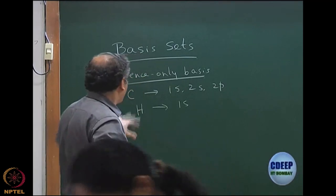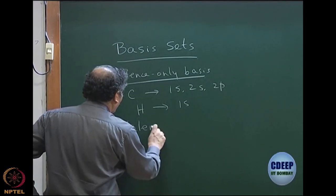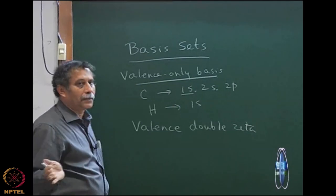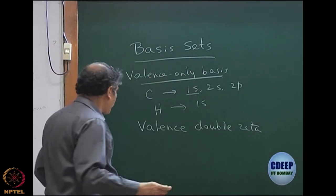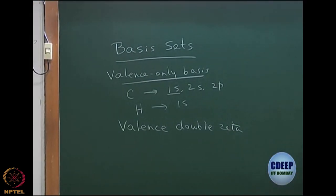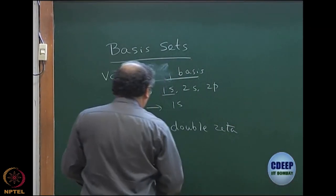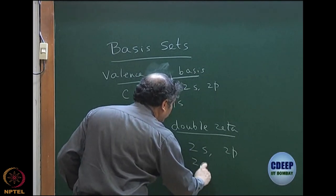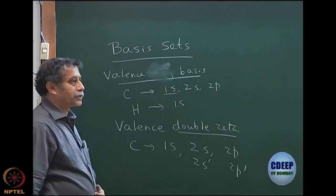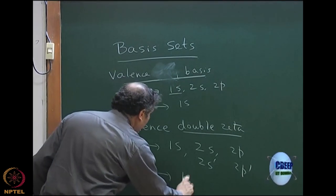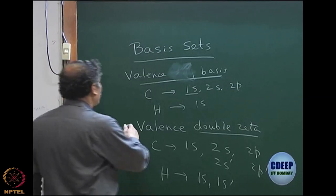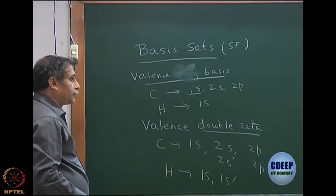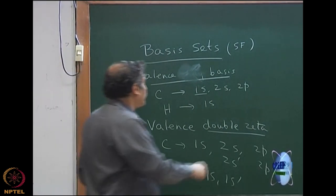We will first describe only the atomic orbital set. Then we have valence double zeta. Please note that when we say valence-only basis, we are still including carbon 1s because the core cannot be completely neglected. What I mean by valence-only is that polarization functions would not be there. So valence double zeta means carbon would have 1s and the actual valence 2s, 2p doubled as 2s prime and 2p prime, and for hydrogen this will be 1s and 1s prime because hydrogen 1s itself is valence.